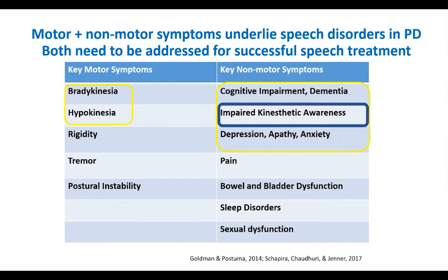There are both motor and non-motor symptoms that underlie the speech deficits that can occur in Parkinson's, and we have to address both in order to have successful speech treatment. The two motor symptoms we really focus on related to speech are bradykinesia — slower movements — and hypokinesia — reduced amplitude or smaller movements. For non-motor symptoms affecting communication, the one I'll focus most on is impaired kinesthetic awareness — your perception of your own speech as you're talking — along with changes in cognition, apathy, anxiety, and depression.